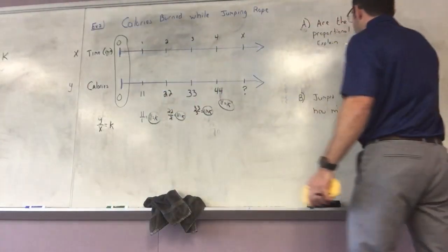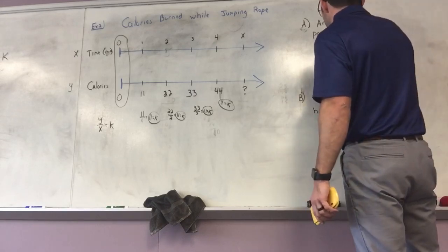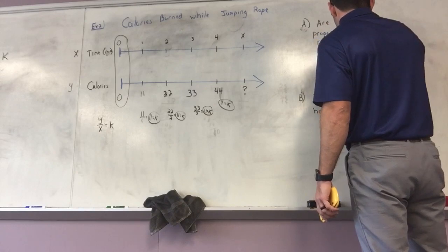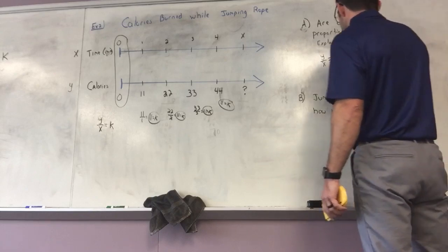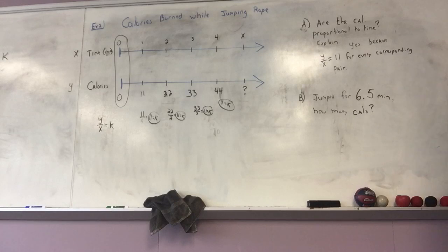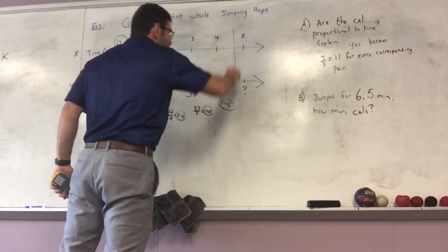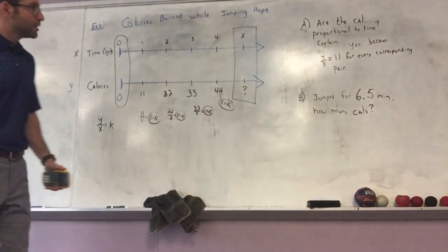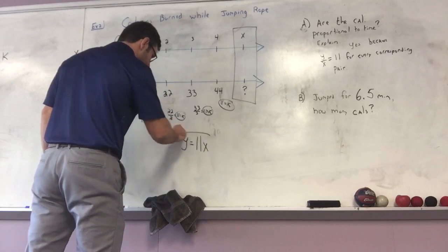So are the calories proportional to time? Yes, because y divided by x equals 11 for every corresponding pair. Now I want you to get in the habit of writing the equation as well. The equation for this proportional relationship is y = 11x.